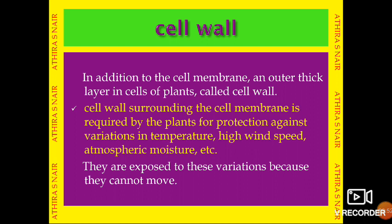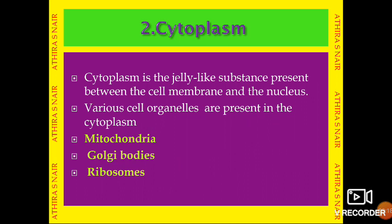The cell wall surrounding the cell membrane is required by plants for protection against variations in temperature, high winds, atmospheric moisture, etc. Plants are exposed to these variations because they cannot move. Cell wall is present only in plant cells, not in animal cells.